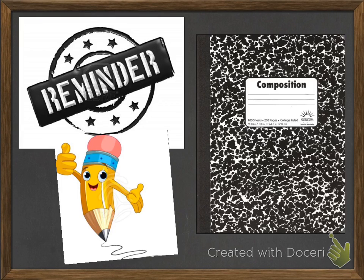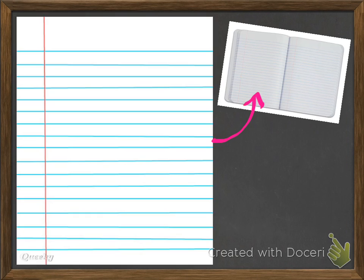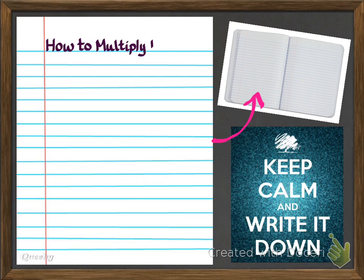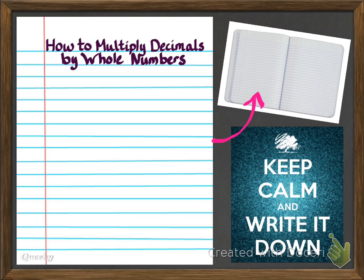A reminder of things you're going to need: your composition notebook, a sharpened pencil, and remember to copy down notes, especially when I tell you to do so. Open up your composition notebooks to the next available two pages as shown in the picture. We're going to be writing on the left side first, and at the very top you're going to title it: How to Multiply Decimals by Whole Numbers. Remember to pause the video so you can copy down the notes.